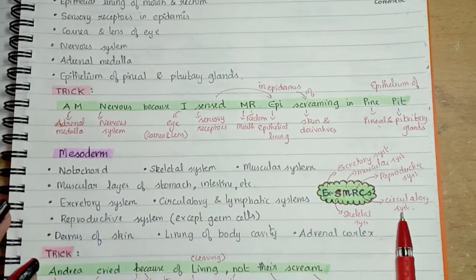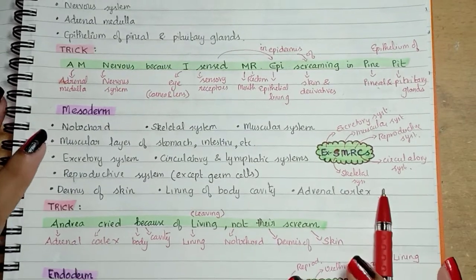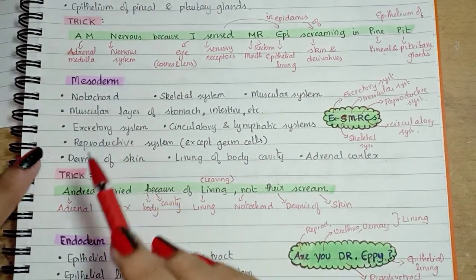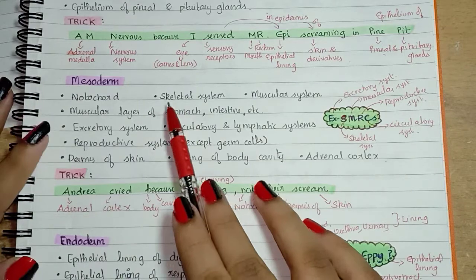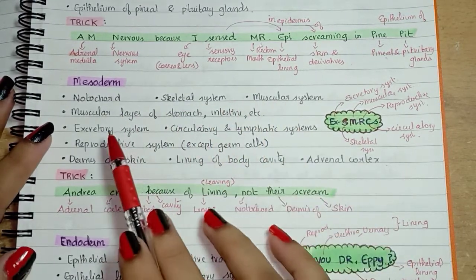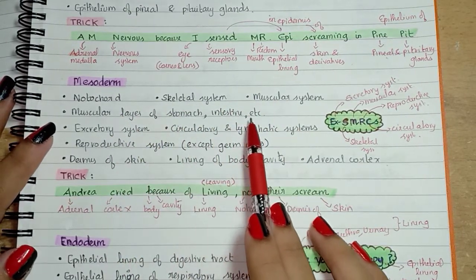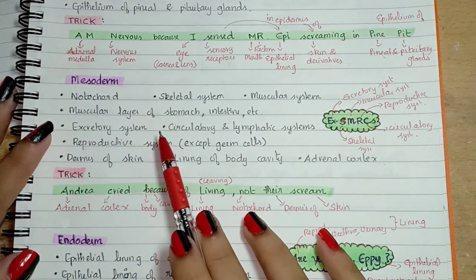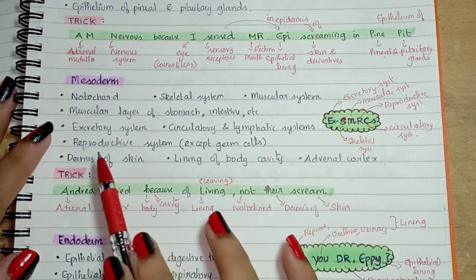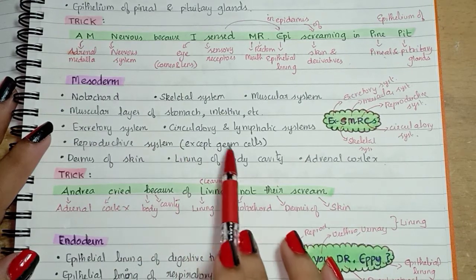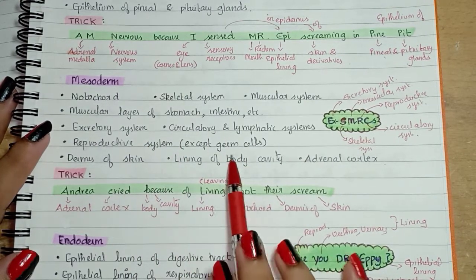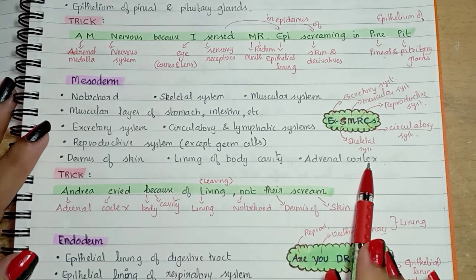Next is mesoderm. The structures formed by mesoderm are: notochord; skeletal system; muscular system; muscular layer of stomach, intestine, etc.; excretory system; circulatory and lymphatic systems; reproductive system (except germ cells); dermis of skin; lining of body cavity; and adrenal cortex.